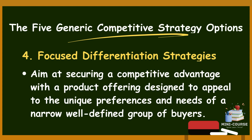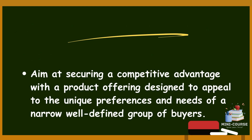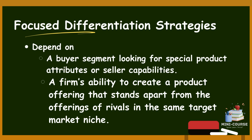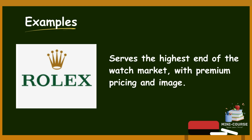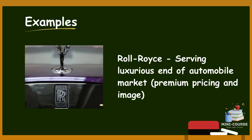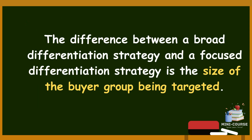Number four is focused differentiation strategies, which aim at securing a competitive advantage with a product offering designed to appeal to the unique preferences and needs of a narrow, well-defined group of buyers. It depends on a buyer segment looking for special product attributes or seller capabilities, and a firm's ability to create a product offering that stands apart from rivals in the same target market niche. Examples include Rolex, serving the highest end of the watch market with premium pricing and image, and Rolls-Royce, serving the luxurious end of the automobile market. The key difference from broad differentiation is simply the size of the buyer group being targeted.